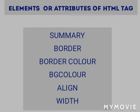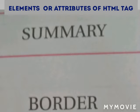The attributes associated with the table tags are summary, border, border color, bg color, align, and width. Summary specifies the text string that gives a brief description about the table.